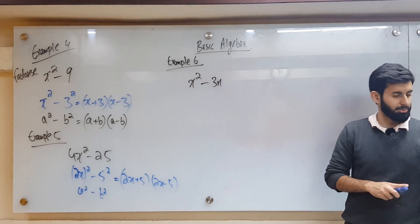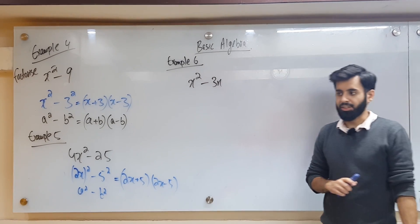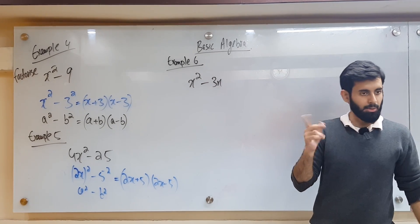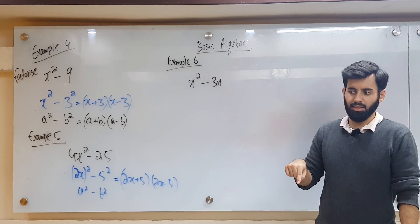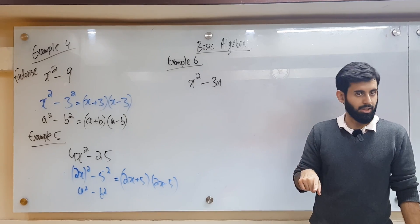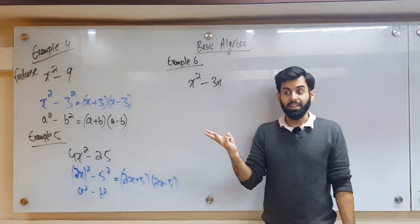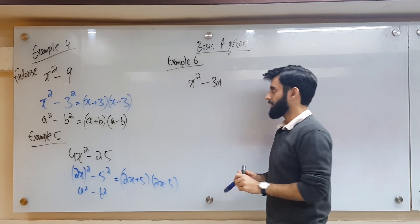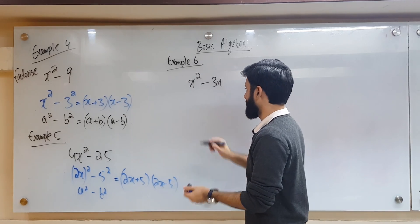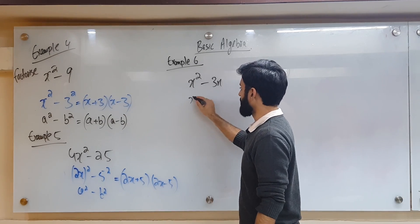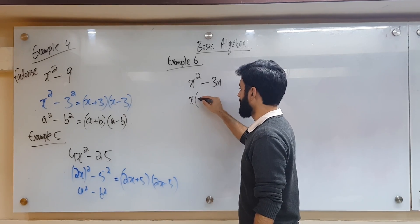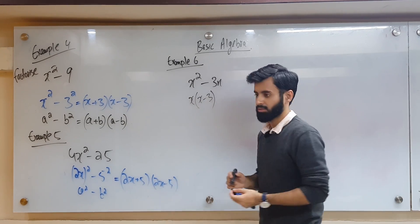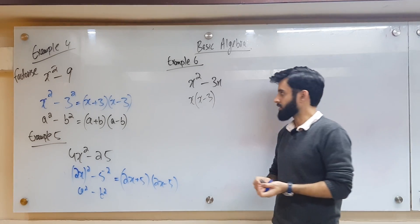x squared minus 3x. Tell me — how many terms do you have here? 2. So we can do middle term breaking? No — we do middle term breaking when there are 3 terms. What will we do here? We will factorize by taking common. What can I take common here? x. And that's it — end of story.